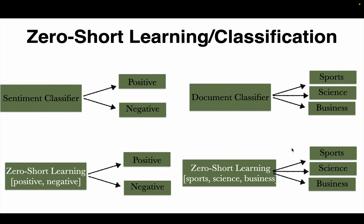The technique zero-shot learning or classification is quite interesting and becoming popular in recent days. Let's say we have some documents and we want to label them — whether it is positive or negative, which is the sentiment, and we also want to classify the document as either sports, science, or business. So we have two target labels: one is sentiment classification and the other is topic classification.